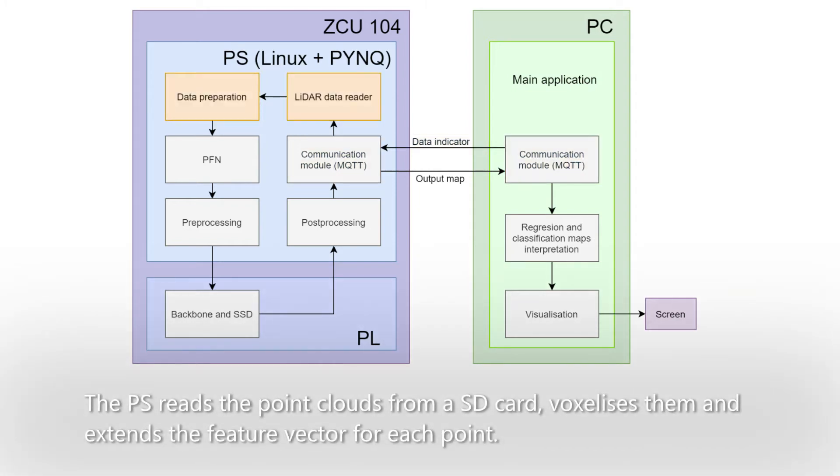The PS reads the point cloud from an SD card, voxelizes them, and extends the feature vector for each point.